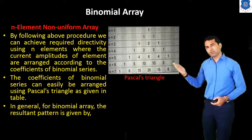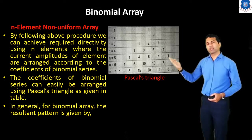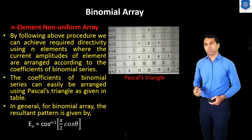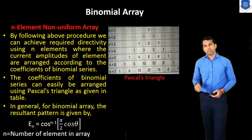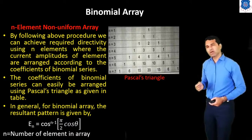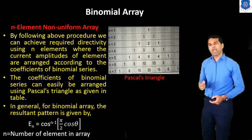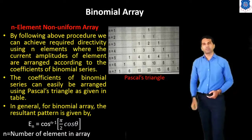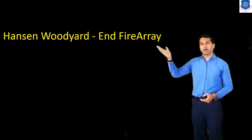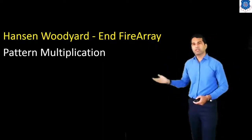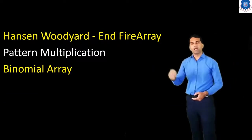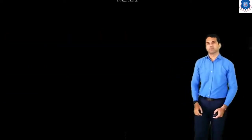The current ratios can be arranged using Pascal's triangle for N equals 1, 2, 3, 4, and so on. The resultant equation is En equals cos^(N-1)(pi/2 · cos(theta)), where N is the number of elements in the array. In this lecture, we discussed the Hansen-Woodyard Endfire Array, pattern multiplication, and the binomial array. Thank you.